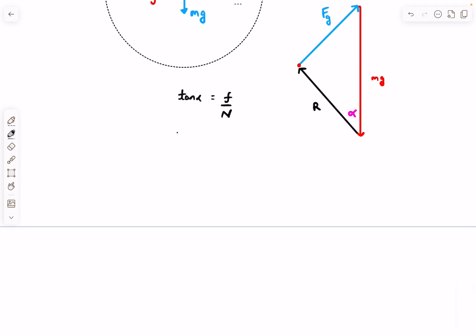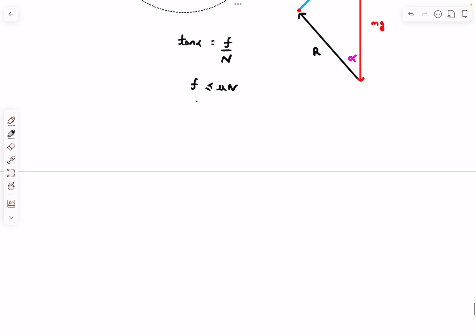If we observe this quantity F divided by N, we can find its maximum value because the maximum value of the numerator is μN. We know F ≤ μ times the normal reaction. From here, F over N ≤ μ, and F over N is tan alpha. So tan alpha ≤ μ.